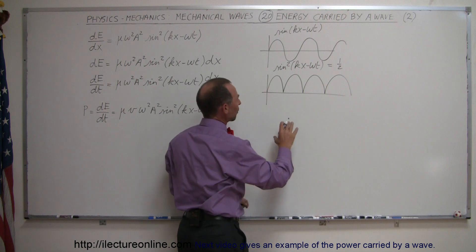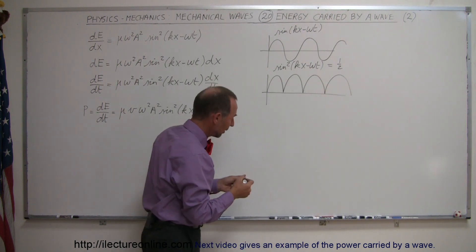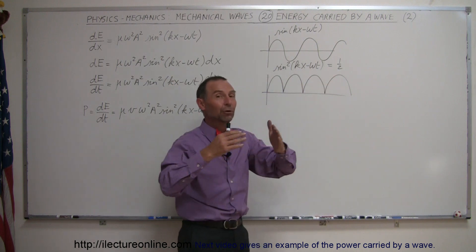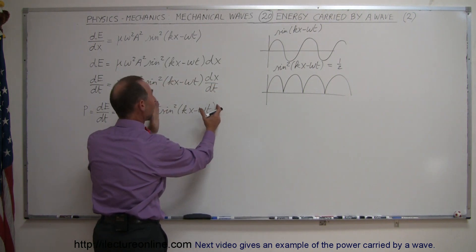So, in other words, if I were to go ahead and find the average height of this, the average function using a calculus trick, I would find that if I calculate that, that will always be equal to a half over enough waves like that. In other words, I could replace this by one-half.